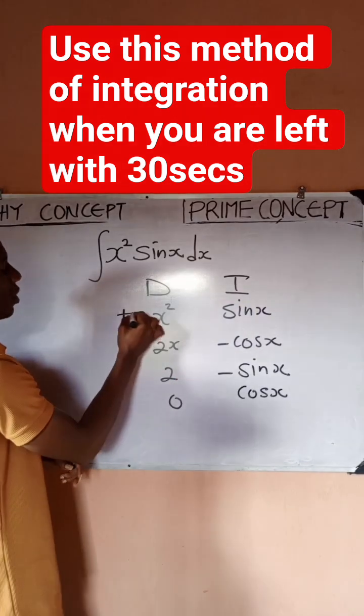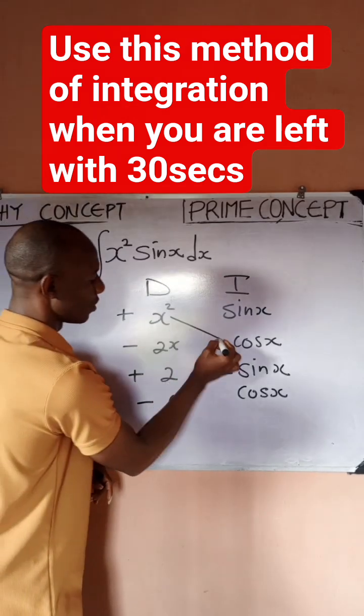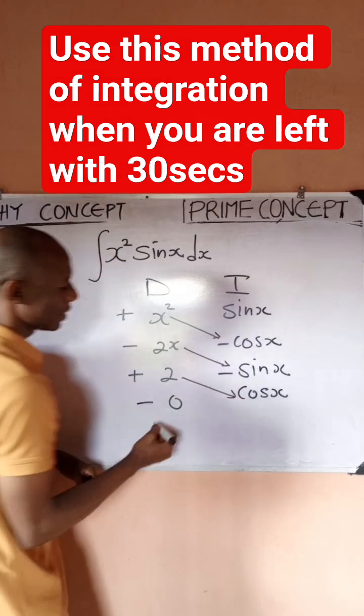The next thing is to start with plus, minus, plus, minus. Then you multiply diagonally like this, like this.